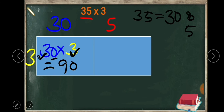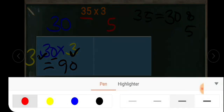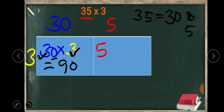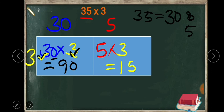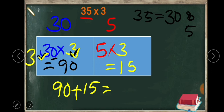And here, 5 into 3 — 5 threes are 15. So here: we multiplied 3 and 3 to get 9, then put the 0, giving 90. And 5 threes are 15. The next step is to add these 2 products: 90 plus 15. What is 90 plus 15? It is 105. So the product of 35 and 3 is 105.